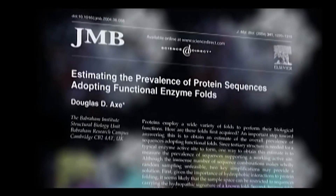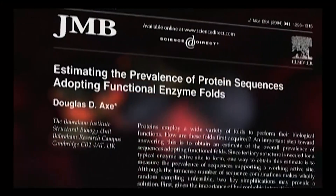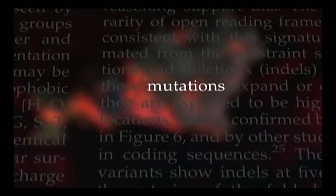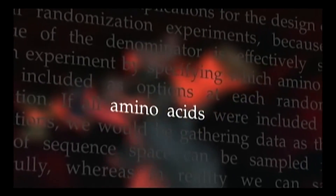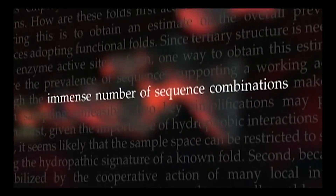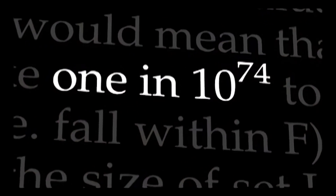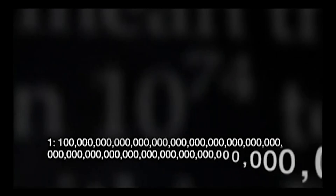How far beyond? Axe published his findings in the Journal of Molecular Biology. He determined that among all the possible amino acid combinations, the probability of generating just one short protein by mutation is roughly 1 in 10 to the 74th power — or one chance in 100 trillion, trillion, trillion, trillion, trillion, trillion.